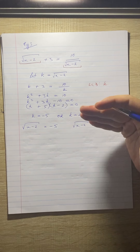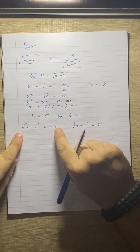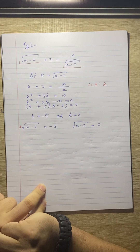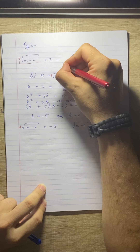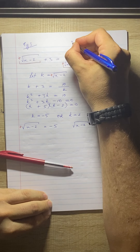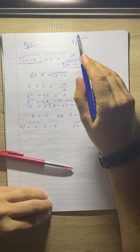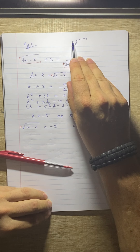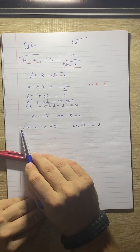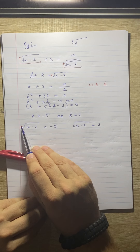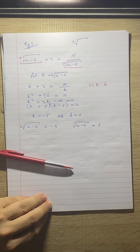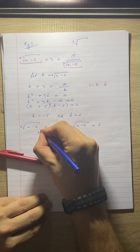Back-substituting: the square root of x minus 2 equals minus 5, and the square root of x minus 2 equals 2. Now, the square root always gives a positive result — you can't take the square root of something and get a negative number. So you cannot have a positive equal to a negative number. Therefore, there is no solution for the case where the square root of x minus 2 equals minus 5.